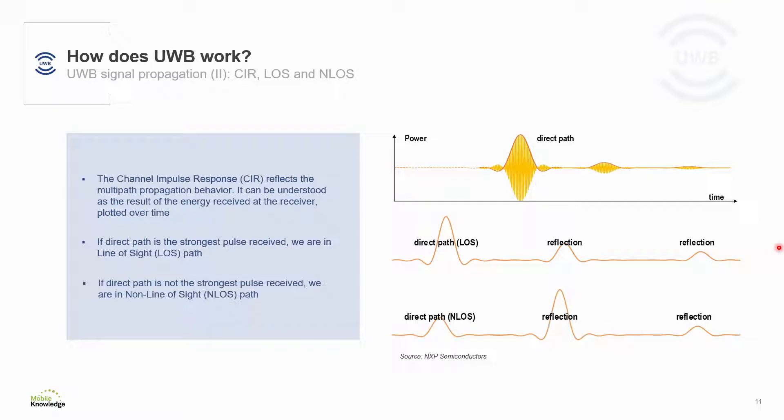If the pulse that has the higher energy level is not the first one, this means that it is received through a non-line of sight. So it could be due to an obstacle or lots of reflections in the path.